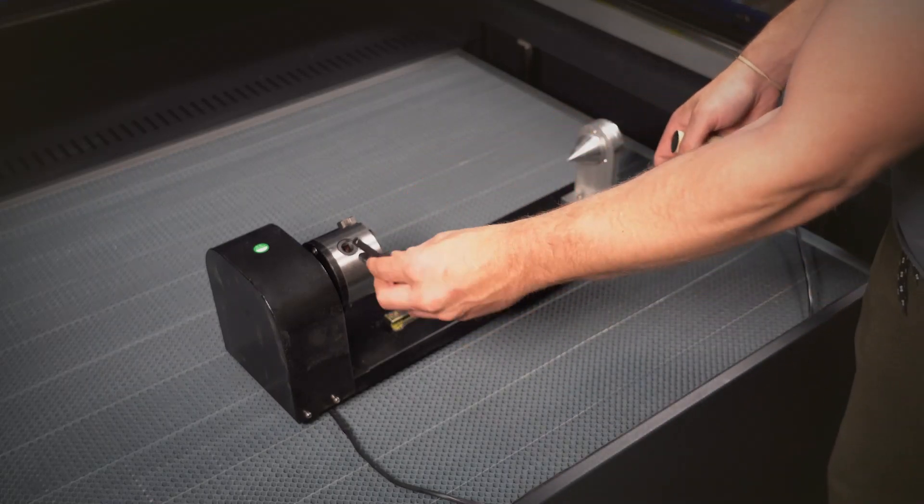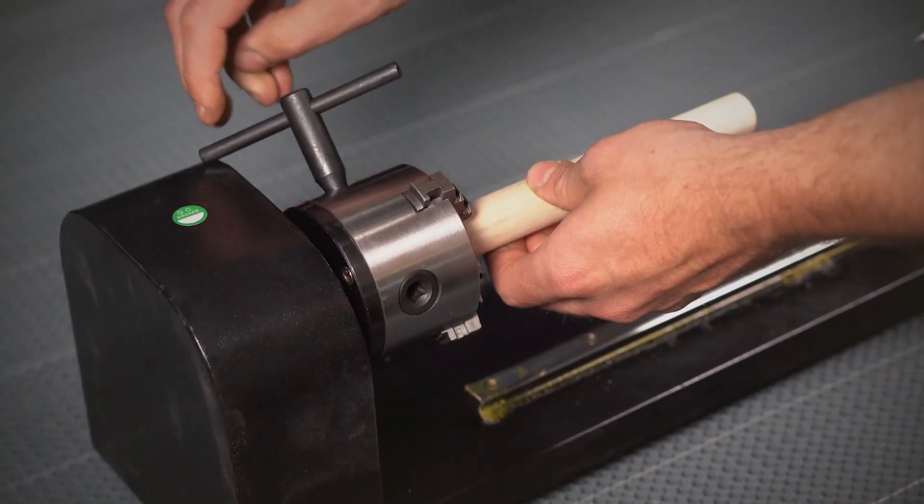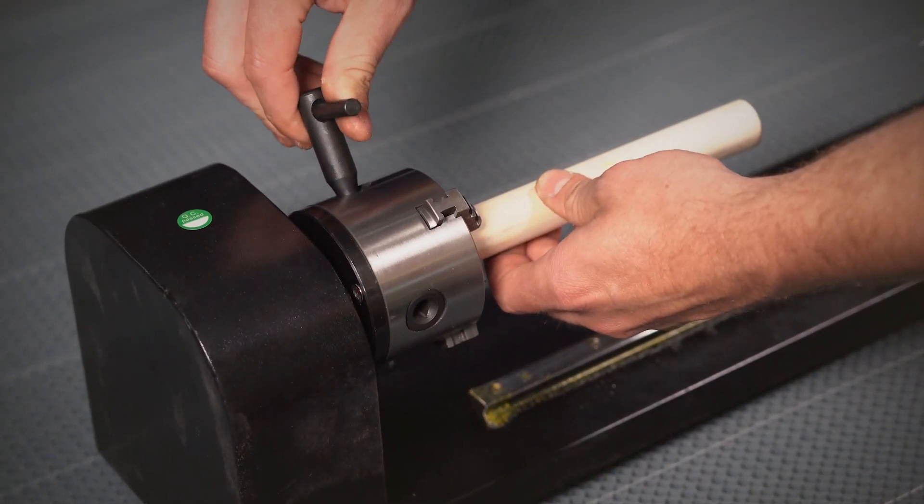With the chuck rotary, you can either clamp an object from the outside or grip an object from the inside by making adjustments with the tool.